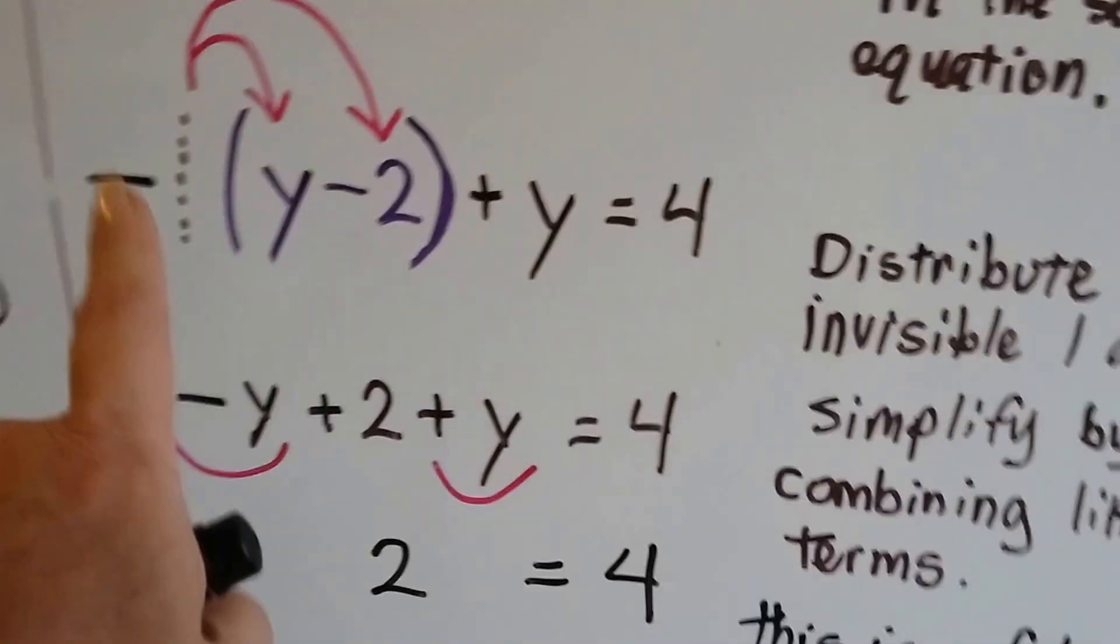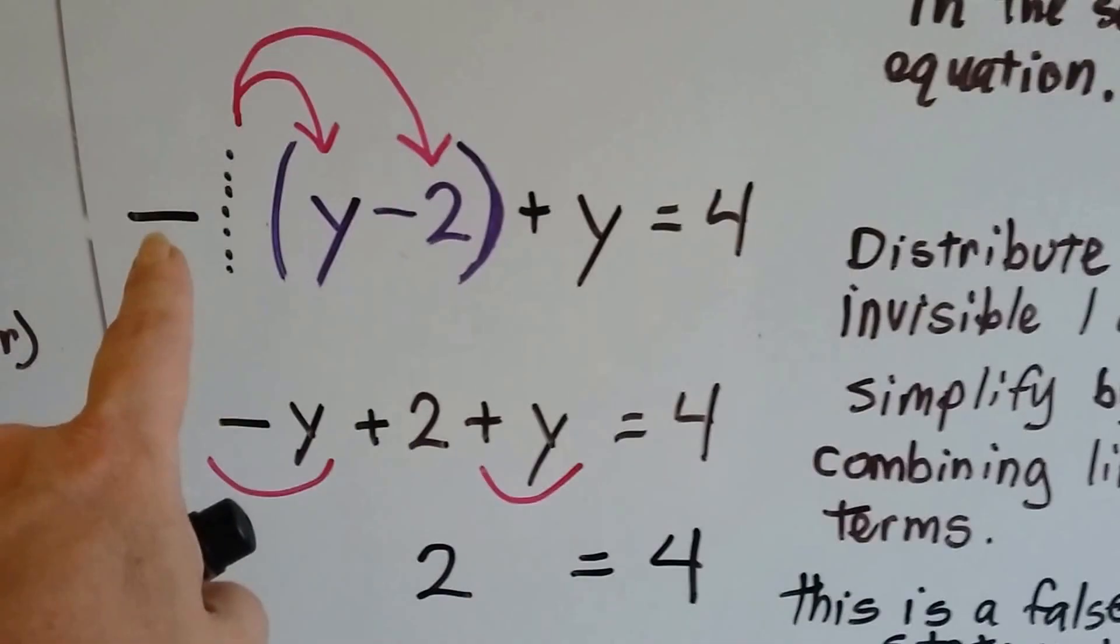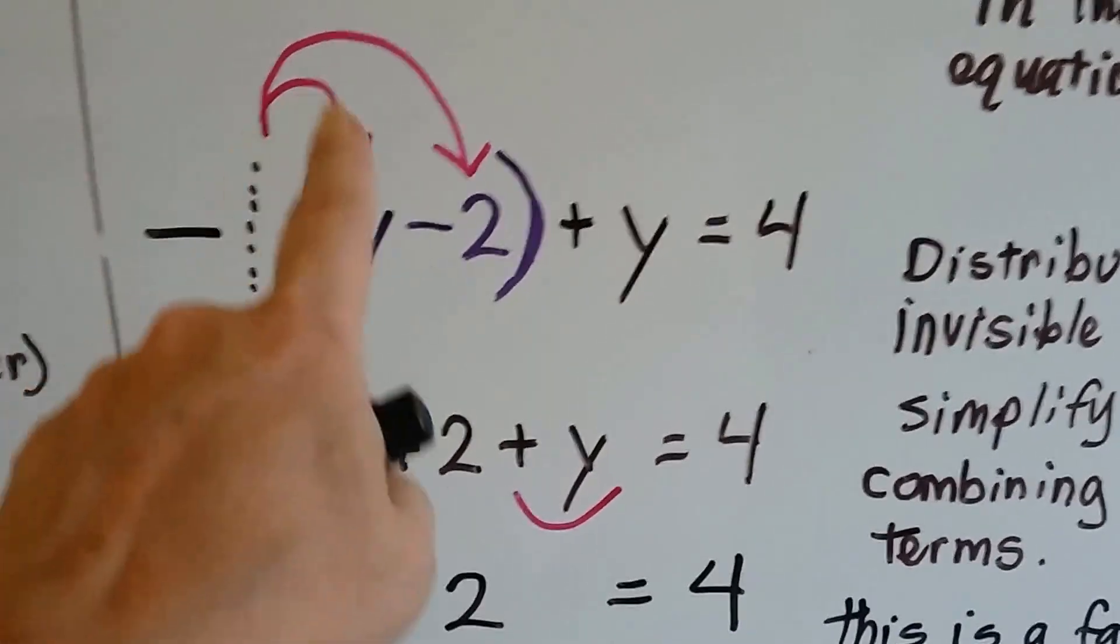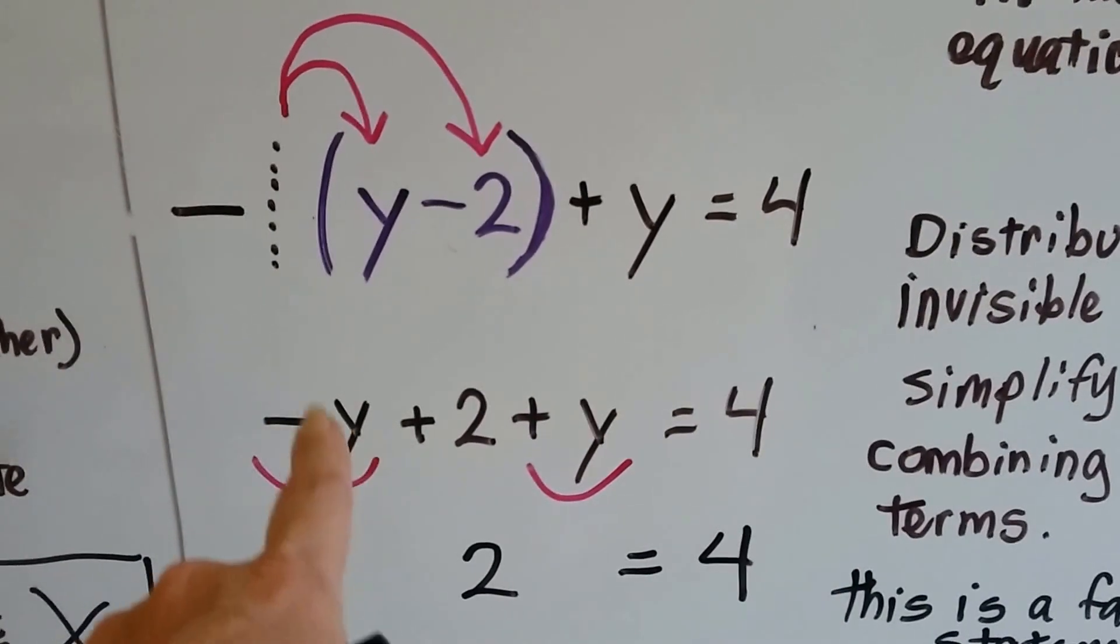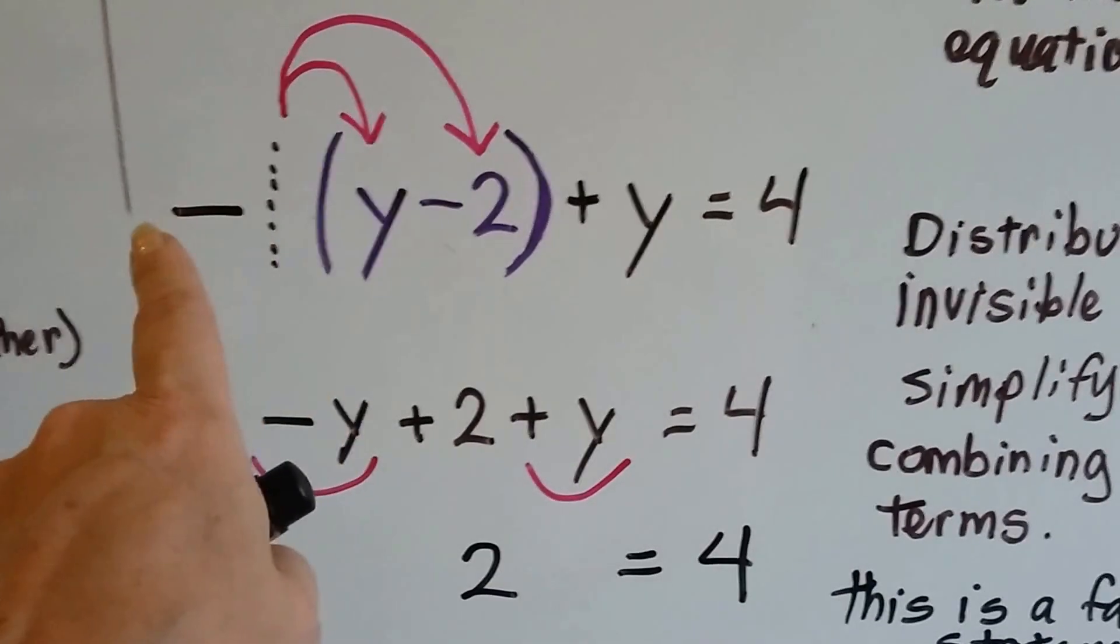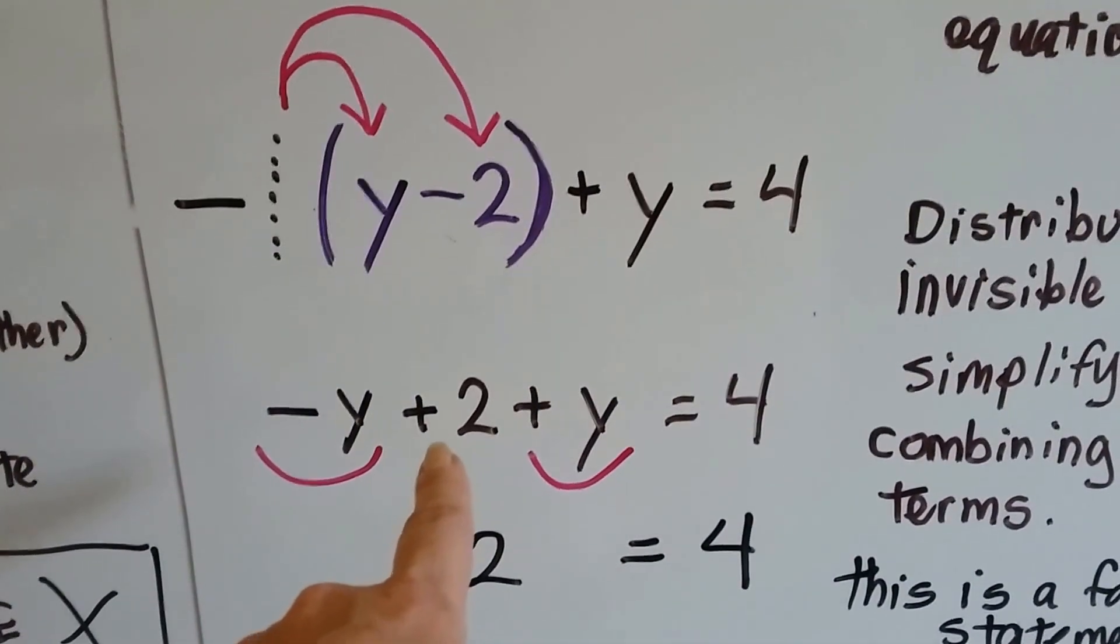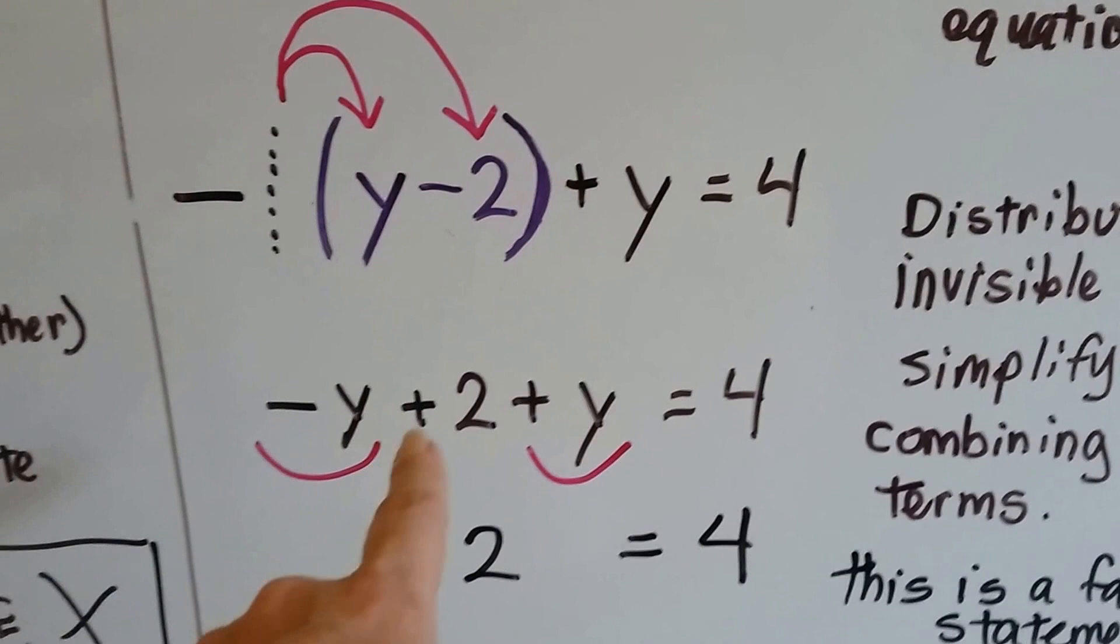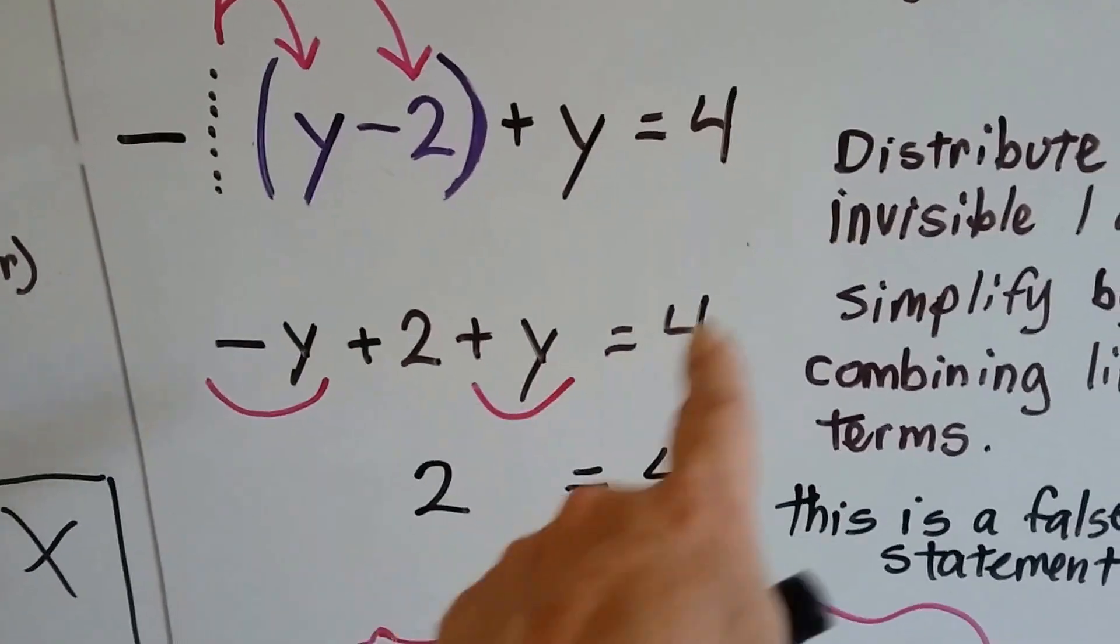So what we need to do is distribute this invisible 1 and then simplify. So negative 1 times y is negative y. It's negative 1y. Remember, invisible 1 is still there. Negative 1 times negative 2 is a positive 2. So now we've got negative y plus 2, and we drop down the plus y and the 4, and that's our new equation.